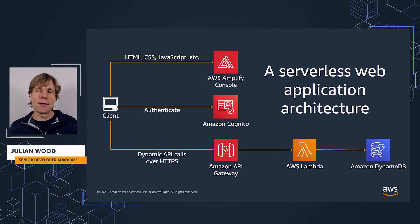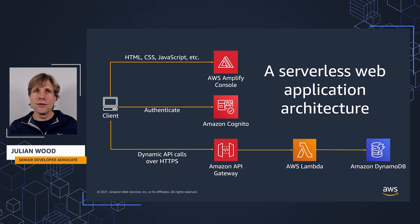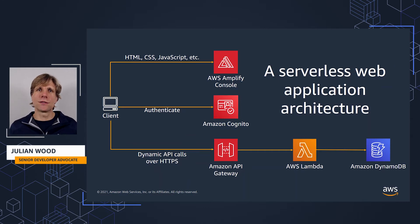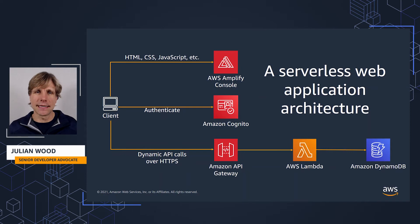We have a service called AWS Amplify Console, which you can use as a hosting platform for single-page applications and static assets such as HTML, CSS, and various JavaScript frameworks. You can use a service like Amazon Cognito to manage user authentication for your customers, and this has a lot of functionality itself. We're going to be spending most of the time in this video series looking at the backend for a web application. A basic backend is where the client makes calls to our managed API services — API Gateway — which then invokes our Lambda function, which includes our business logic, and then does some processing and stores information in DynamoDB, a NoSQL database.